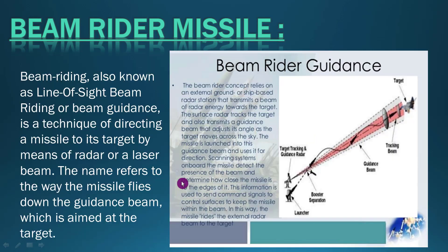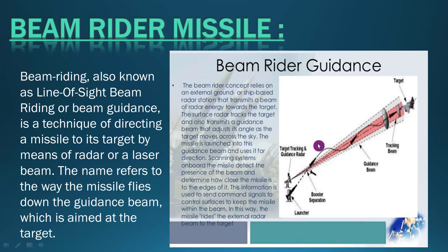In beam rider guidance, a radar station directs a beam at the target. The missile then flies along that beam line, following the line of sight of the beam, until it finds and hits the target. The missile is programmed to stay within the beam and follow it all the way to the target.